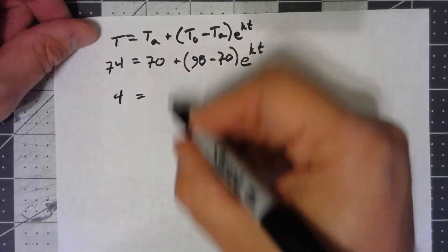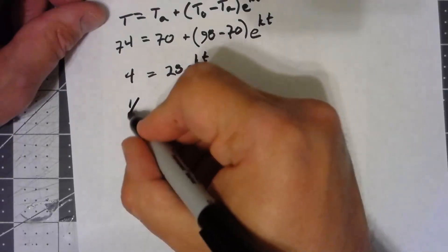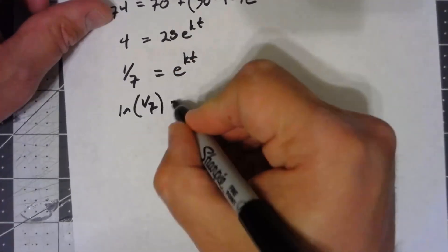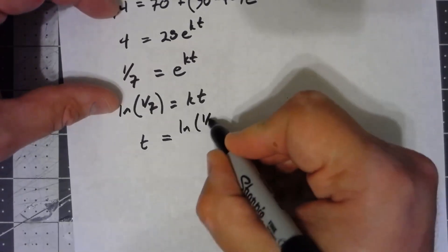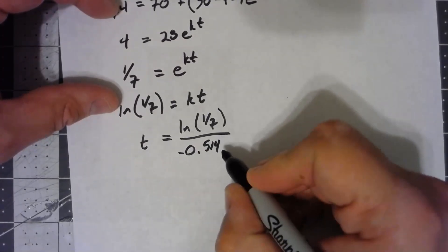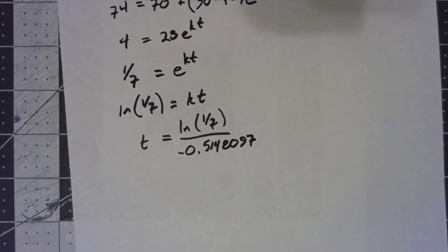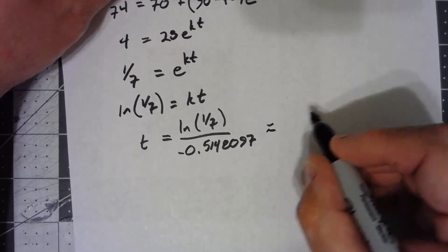Subtracting, so I get 4 equals 28 e to the kt. Divide by 28, 4/28, I may as well simplify that to 1/7. Take the ln of both sides. The ln cancels out the e, and so my t equals the ln of 1/7 divided by my K value of negative 0.5148097. And that comes out to be about 3.78 hours.